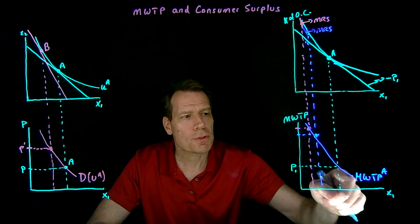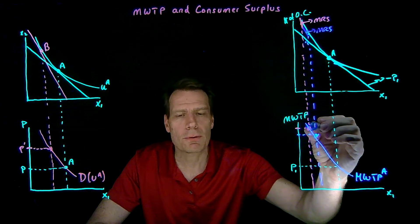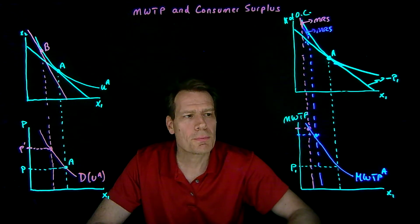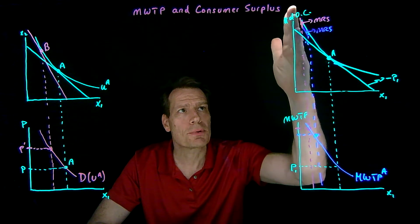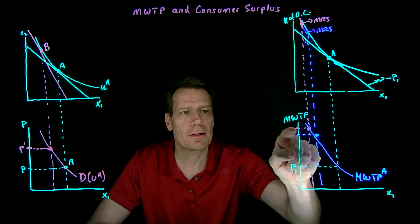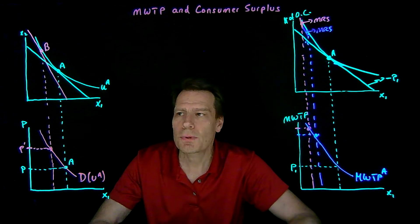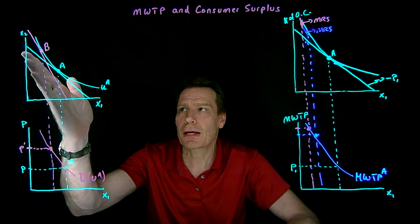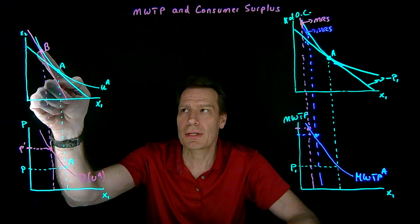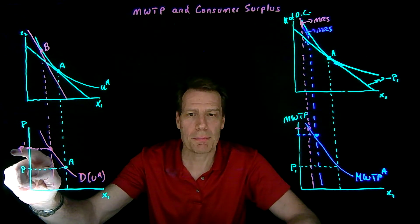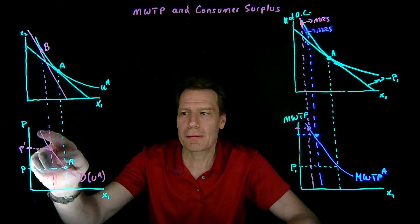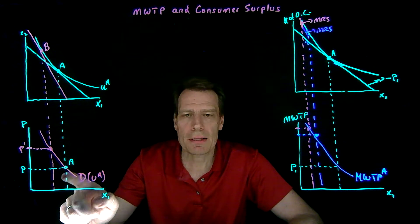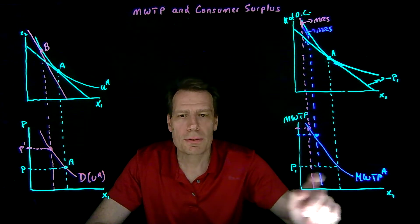So we now have what we call a marginal willingness to pay curve. It tells us how much she was willing to pay for the first unit, for the second unit, the third unit, and so on. Notice what we've done: we've taken slopes and tangencies here and plotted them on these axes, which is exactly what we did when we derived the compensated demand curve — we took a compensated budget, found the tangency, and that slope became the price. So it turns out that compensated demand curves are just marginal willingness to pay curves.